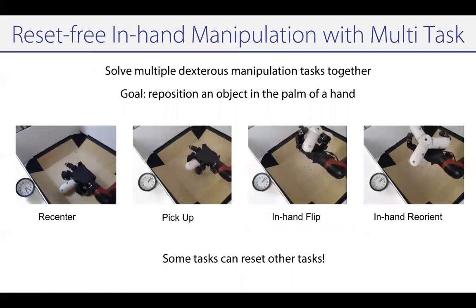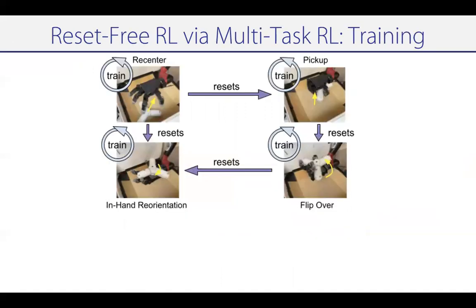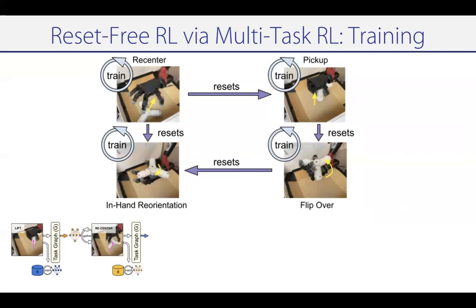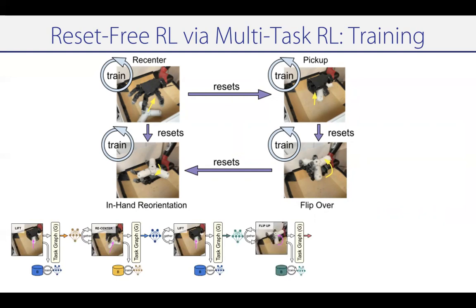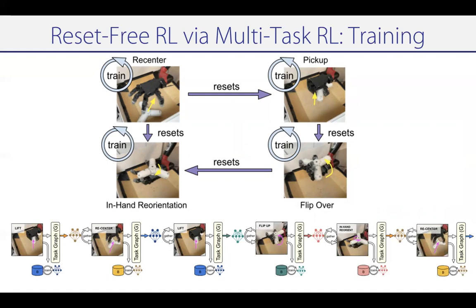Let's look at how a training run of this would proceed. We start by trying to lift the object off the ground, and let's say this is unsuccessful. We can then try doing a recentering to put it in a position where we can try lifting again. Once we try lifting the object again and it is successful, we can then try doing flipping upwards. And if flipping upwards is successful, we can then try doing in-hand manipulation in the palm. When the object falls out of the hand, we can then recenter and try again.